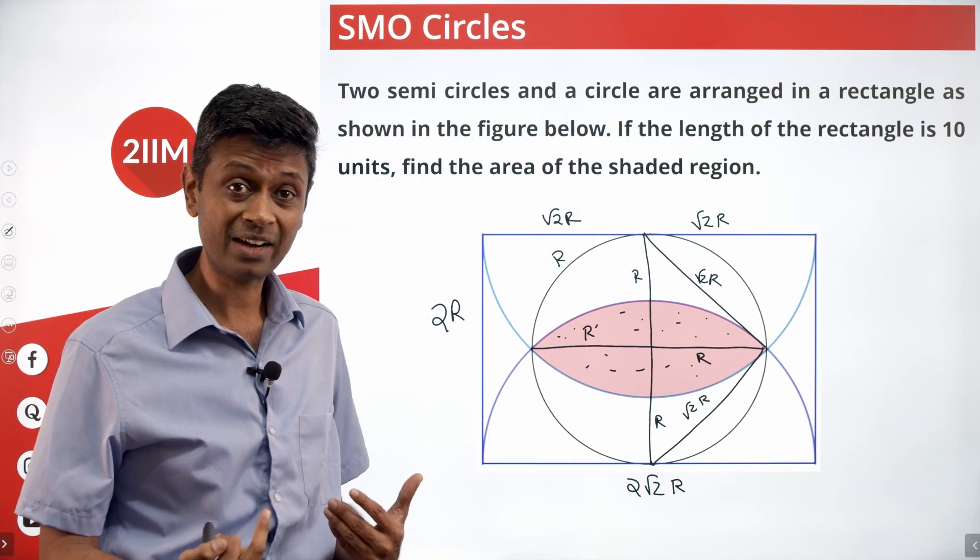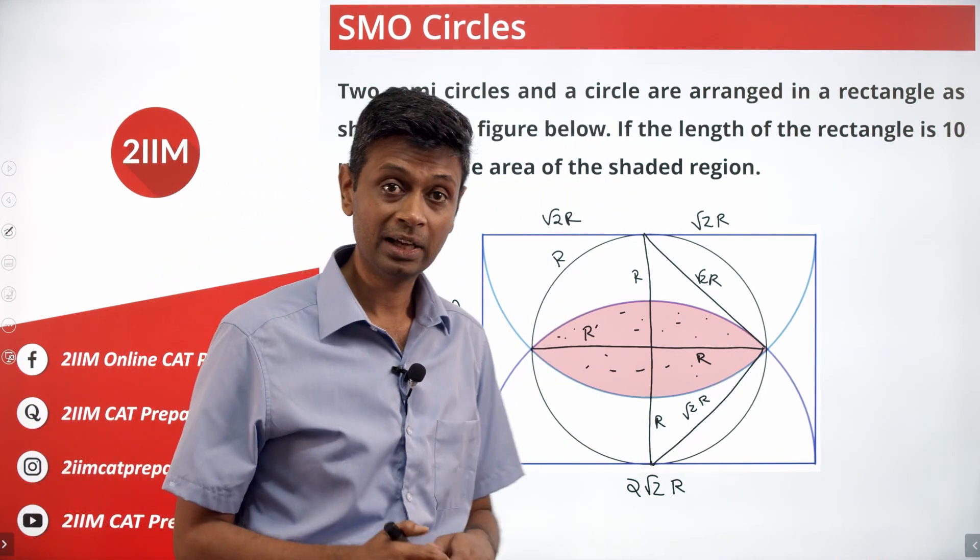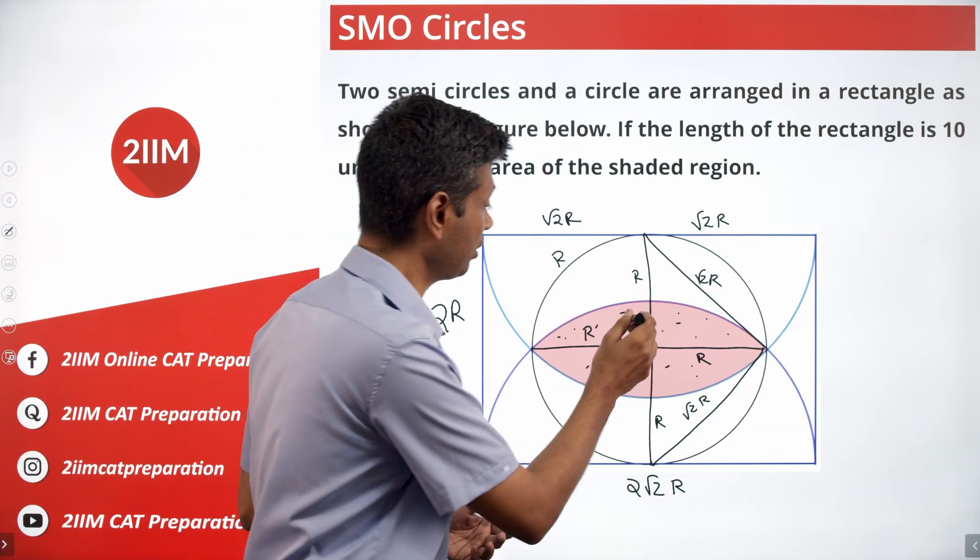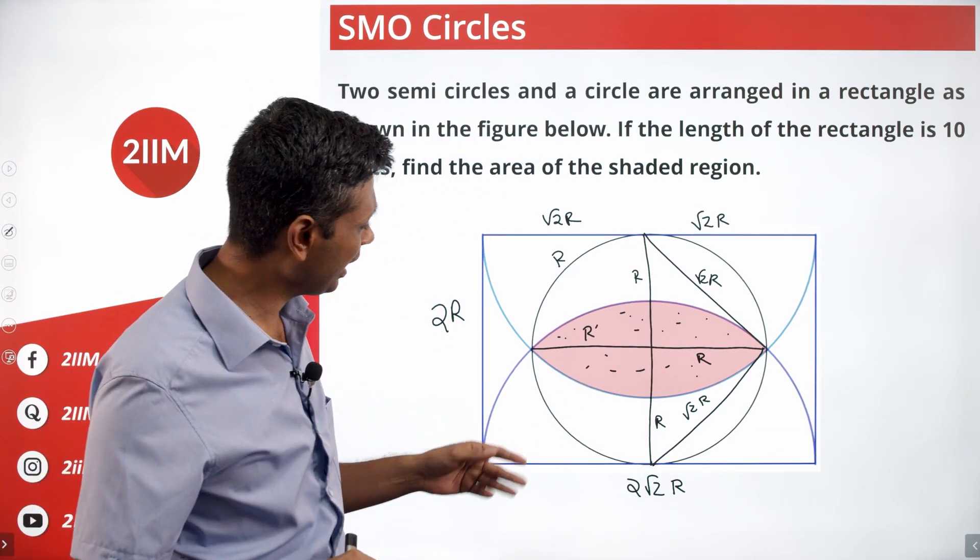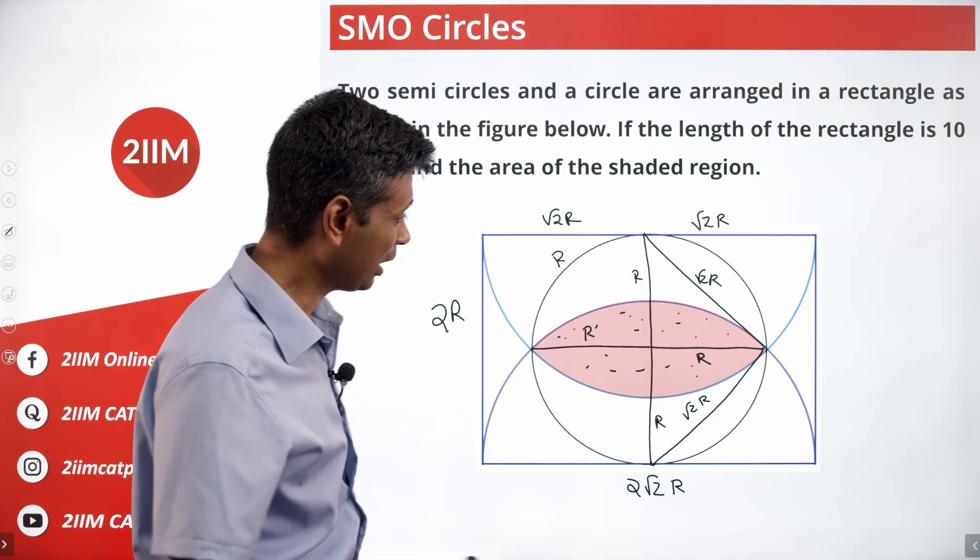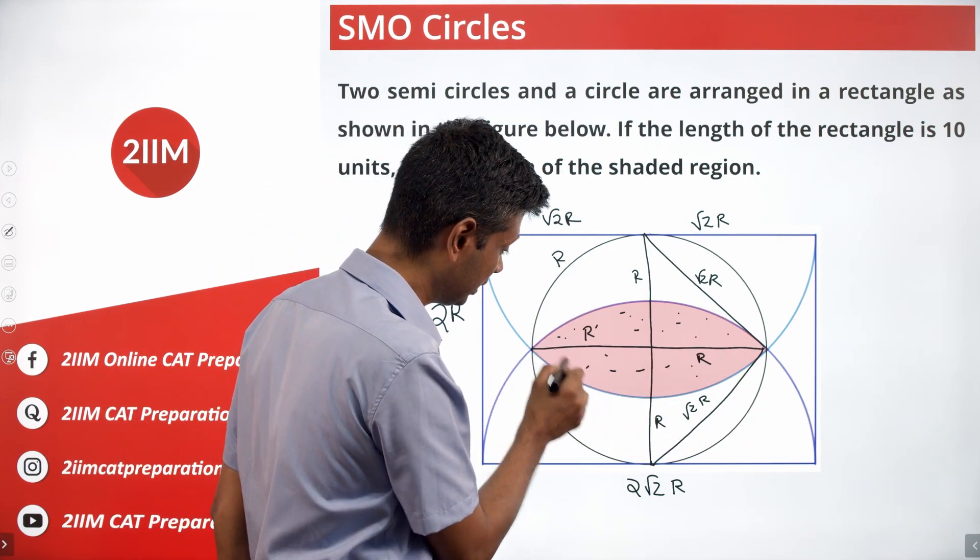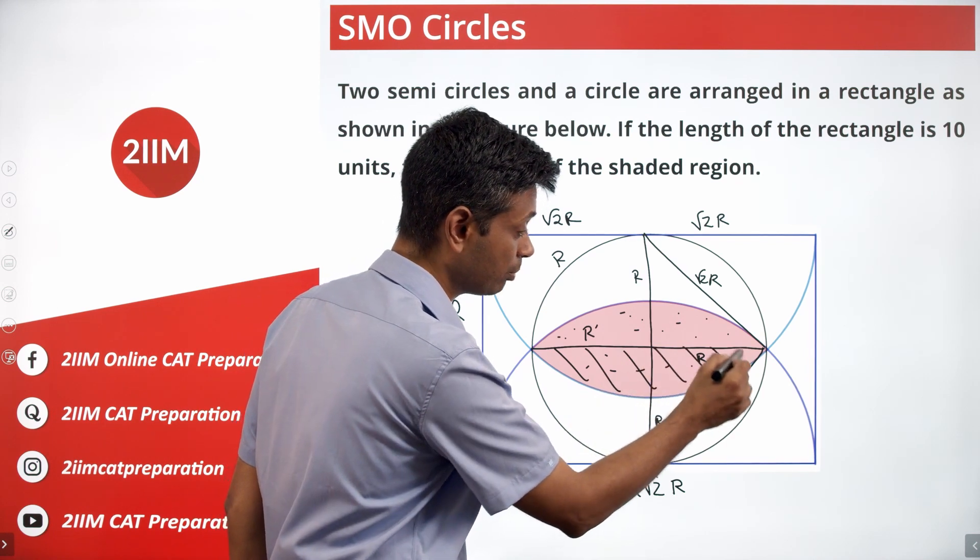Now we still have to imagine this as a segment, and then say I will find area of this segment and then multiply that by 2. How do you find, imagine this as a segment. Imagine this segment. Forget this part, ignore the shaded part.